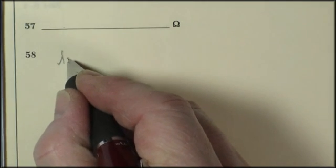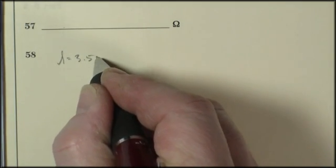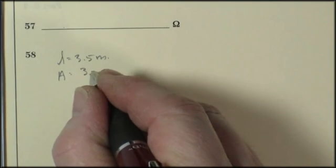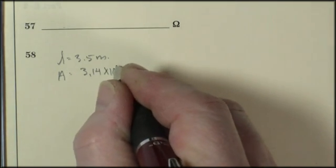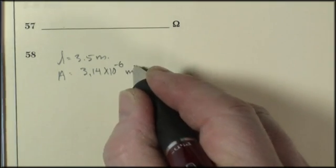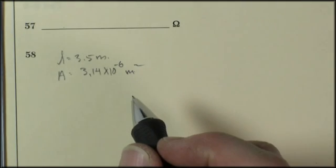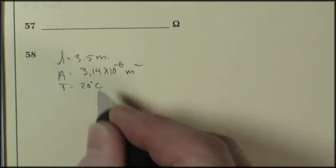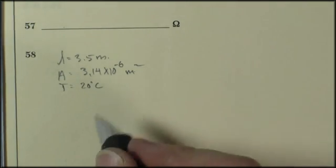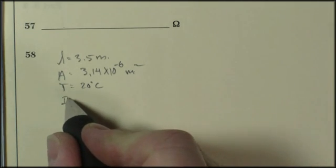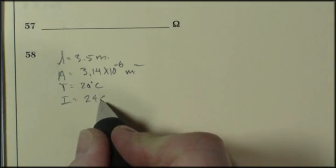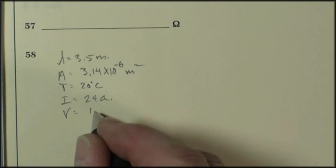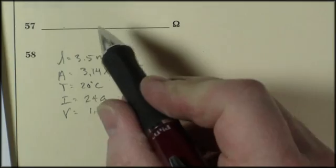Length, 3.5 meters. Cross-sectional area, 3.14 times 10 to the negative 6 meters squared. Do not forget your units. Temperature is 20 degrees Celsius. The current in the wire, current is 24 amps. And the voltage across the wire is 1.5 volts.